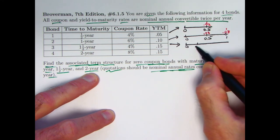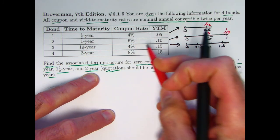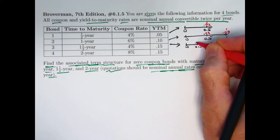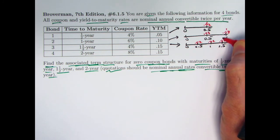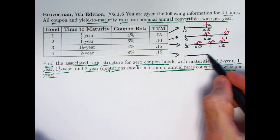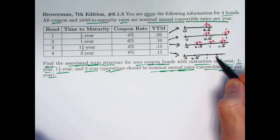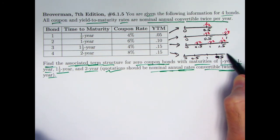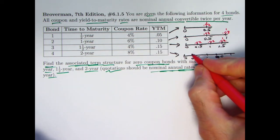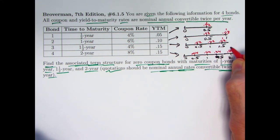We're now on to the 1.5-year bond. The coupon rate divided by 2 is 2% per half year, so I'm getting 0.02 for the coupons, and my redemption amount at time 1.5. Finally, the last one is a 2-year bond — you're going to get 4 coupon payments. The coupon rate as an effective semi-annual rate is 0.5 of 8%, which is 4%, so you'd get coupon payments of 0.04 four times, and then your payment of 1 at the end.